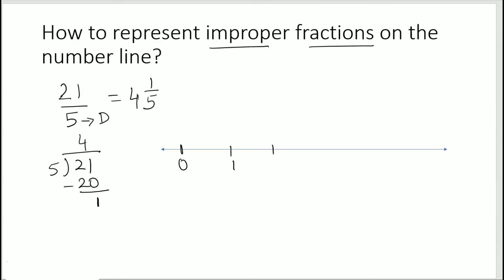Now it is easier to show this on the number line. Say we have 0, 1, 2, 3, 4, 5 — all whole numbers. We need to show 4 and 1/5, so the length between 4 and 5 is divided into 5 equal parts because the denominator is 5: 1, 2, 3, 4, 5. The first point here is 1/5 past 4, so this point is 4 and 1/5.